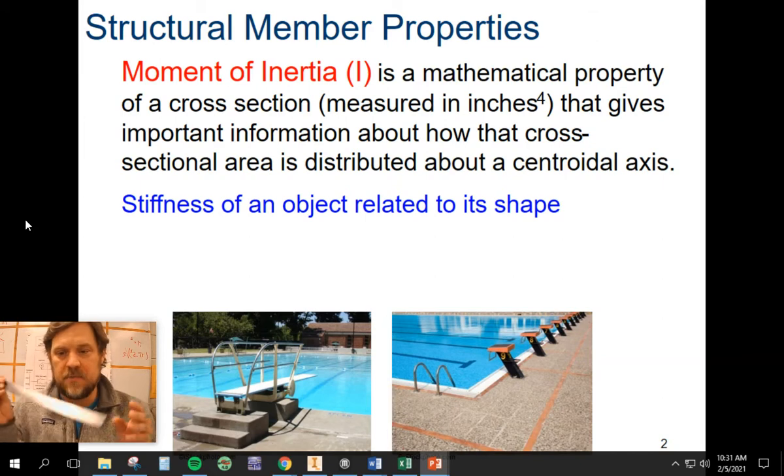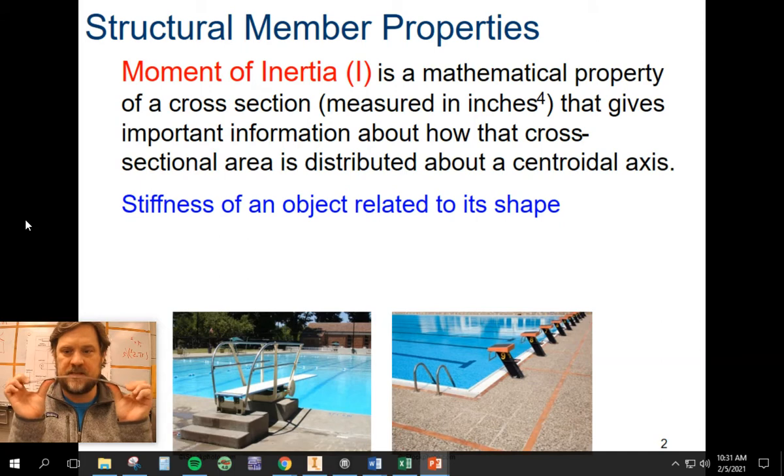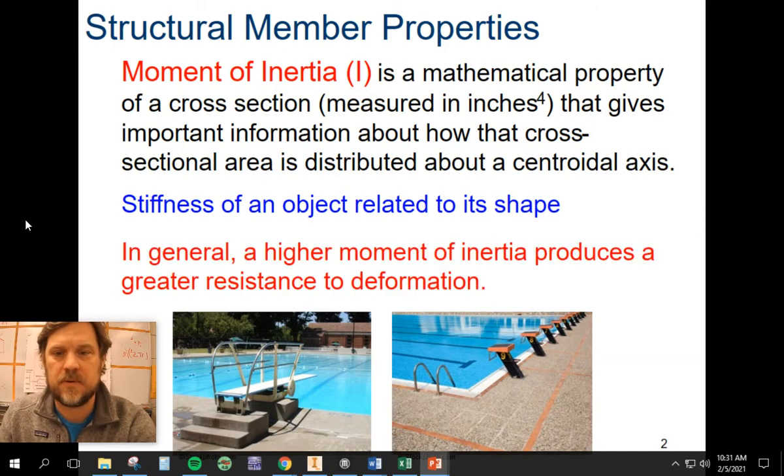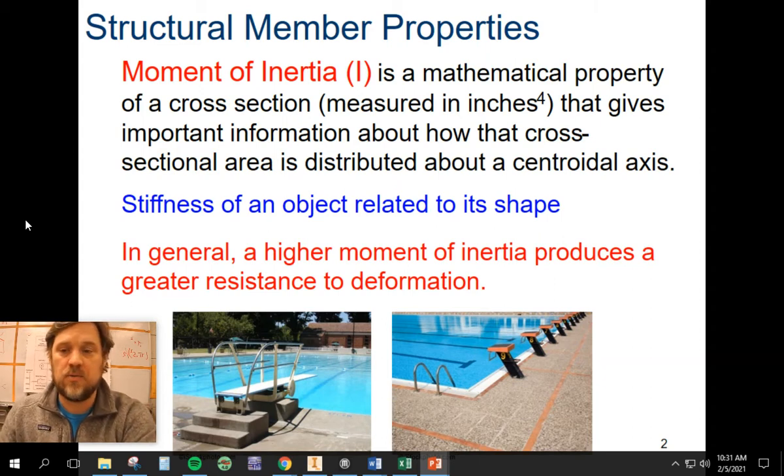The example that I always use is a ruler. In this direction, I can flex it pretty easy. But if I operate it like this, it's pretty hard to bend. So stiffness related to shape. In general, a higher moment of inertia produces a greater resistance to deformation. So basically the bigger the number, the harder it is to bend.